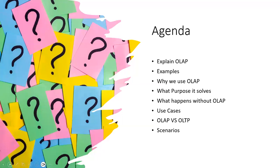Lots of question marks, so let's solve them. We will explain what OLAP is, go through certain examples, then try to understand why we use it and what purpose it solves. We'll look at what would happen if we don't use it, the use cases, and compare it with OLTP. Finally, scenarios to apply what we've learned. All these questions — why, what purpose — will help us understand OLAP.